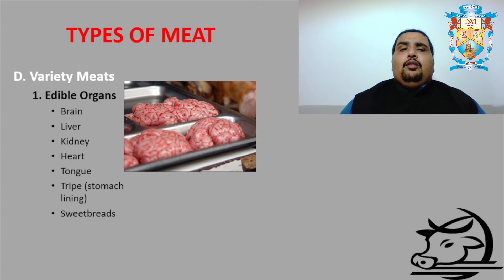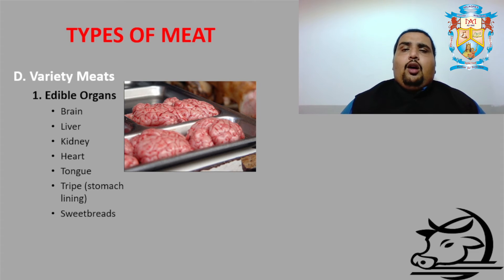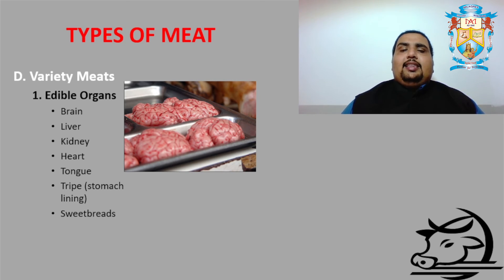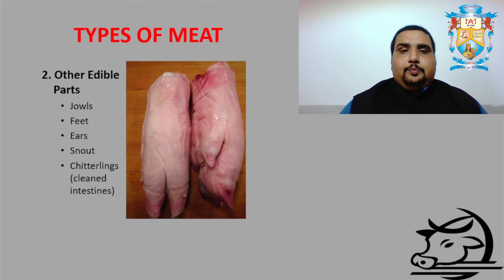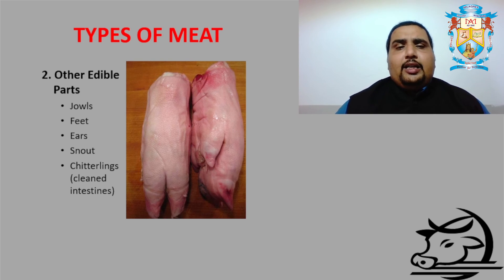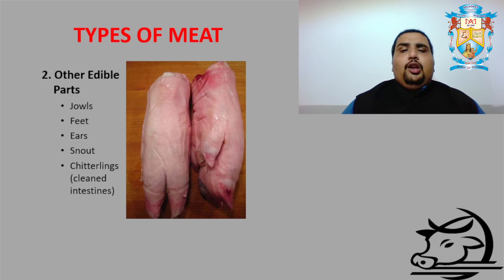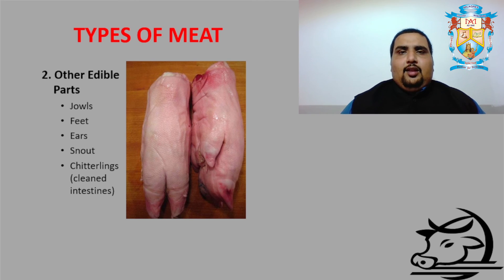Next we go to variety meats — the edible organs of animals. We spoke about exterior meats; now all these animals have internal organs that can be consumed, such as brain, liver, kidney, heart, tongue, tripe (that is stomach lining), and sweetbreads. Other edible parts of the animal that are not prime cuts include jowl, feet, ears, snout, and chitterlings (that is cleaned intestines). I hope you understood the topic — thank you one and all.